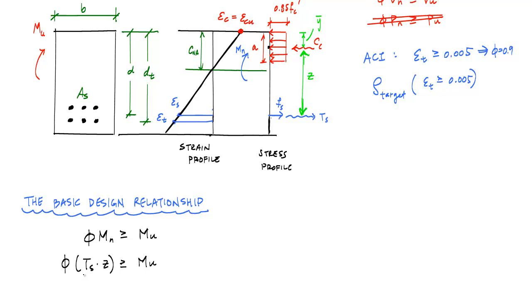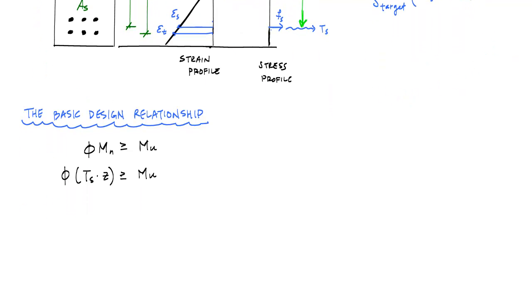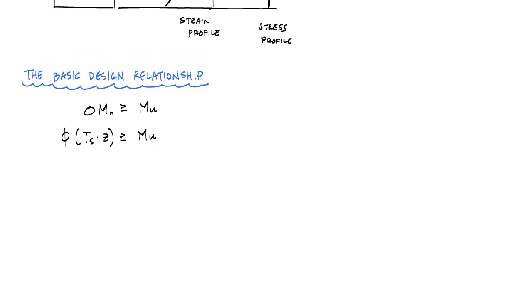If I take moments about the concrete centroid, I know that M sub N is Ts times Z. So really I can say phi times Ts times Z is greater than or equal to MU. And what I want to do is take this relationship and include the reinforcement ratio into it somehow. I also know that as long as I have a tension control beam or as long as my steel has yielded, I know that the force in the steel is just going to be phi ASFY. And if I have a singly reinforced concrete beam and I use the equivalent stress block, my arm, this Z is going to be D minus A over 2. And from equilibrium for a singly reinforced rectangular concrete section, I would have ASFY equals 0.85 FC prime times B times A. And I can solve for A here. A is ASFY over 0.85 FC prime times B.